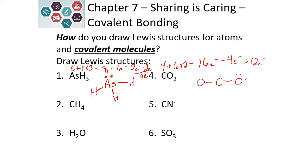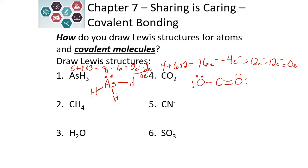We fill the octets for each oxygen, which requires 12 electrons, leaving none. Our oxygens are happy with 8 electrons, but our carbon only has 4. So we take a lone pair from each oxygen and share it with the carbon to complete its octet. This leaves carbon with 2 double bonds. Now each oxygen has 8 electrons, and carbon also has 8 electrons in the form of 2 double bonds. This is our Lewis structure for carbon dioxide.